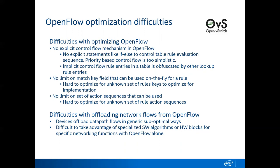OBS cannot distinguish between the control flow rules and the lookup rules without some help. Also, there is no limit on match key fields that can be used in a table — it's hard to optimize Datapath for a known set of logical lookup tables and a known set of fields. Similarly, there is no limit on the set of action sequences that can be used. It's hard to optimize for a known set of rule actions in the Datapath. Because of these difficulties, devices offload Datapath network flows in generic and suboptimal ways.